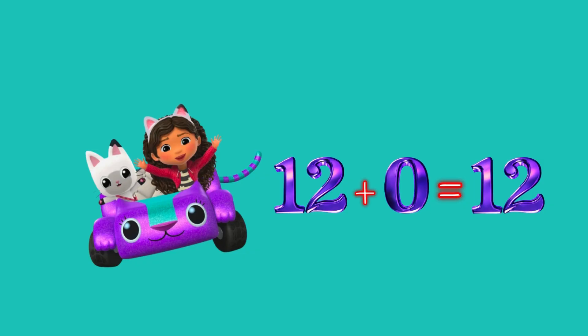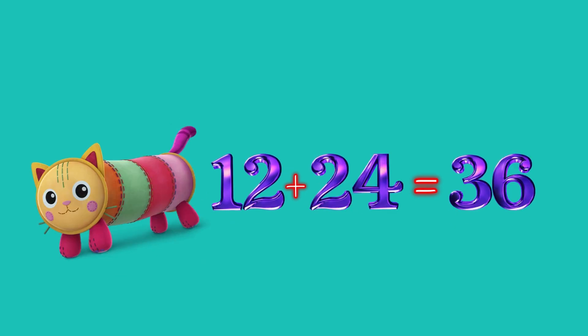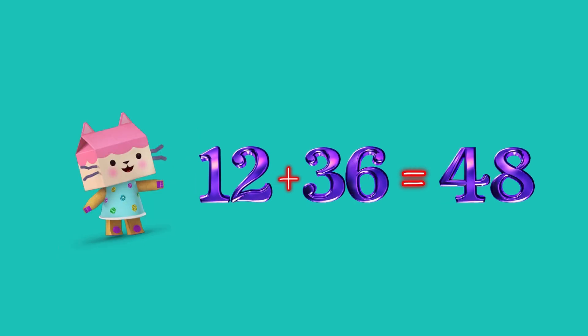Let's begin. 12 plus 0 equals 12, 12 plus 12 equals 24, 12 plus 24 equals 36, 12 plus 36 equals 48, 12 plus 48 equals 60.